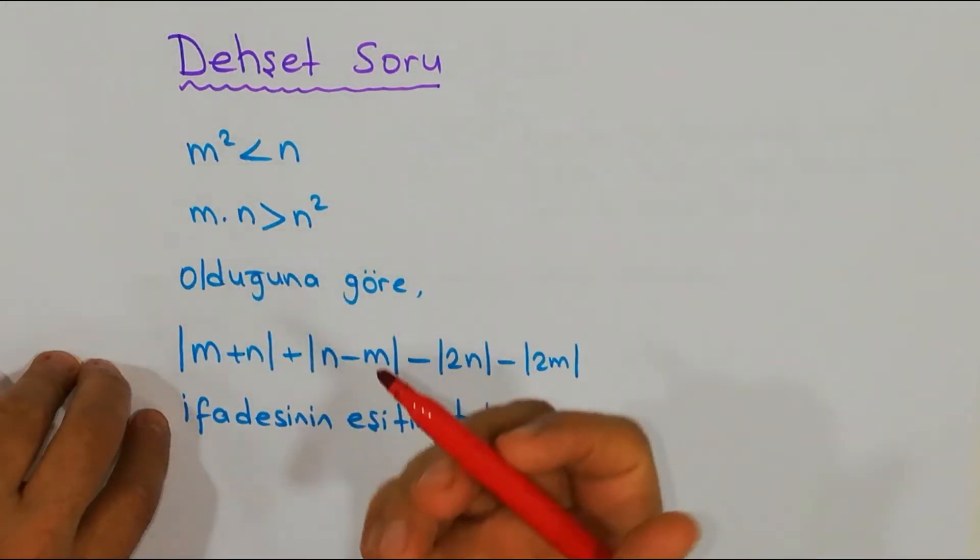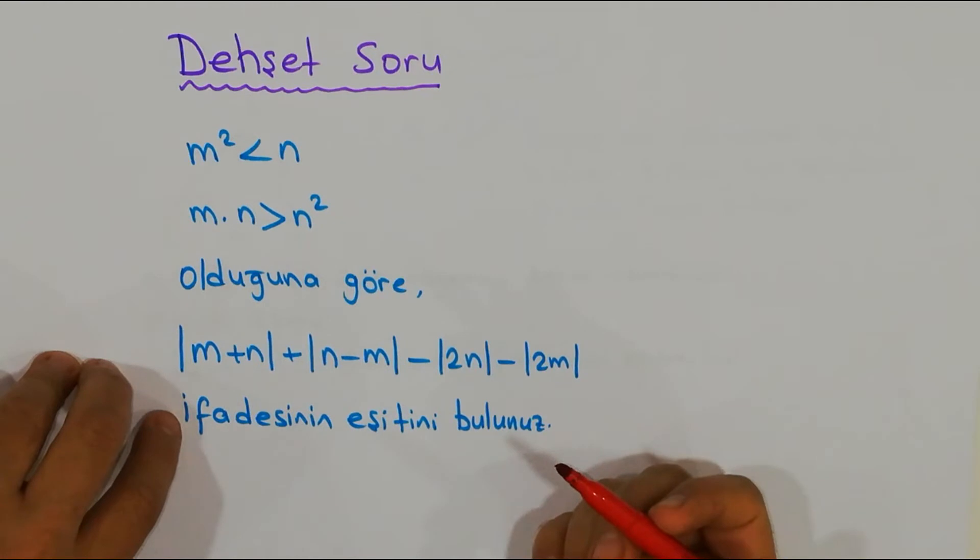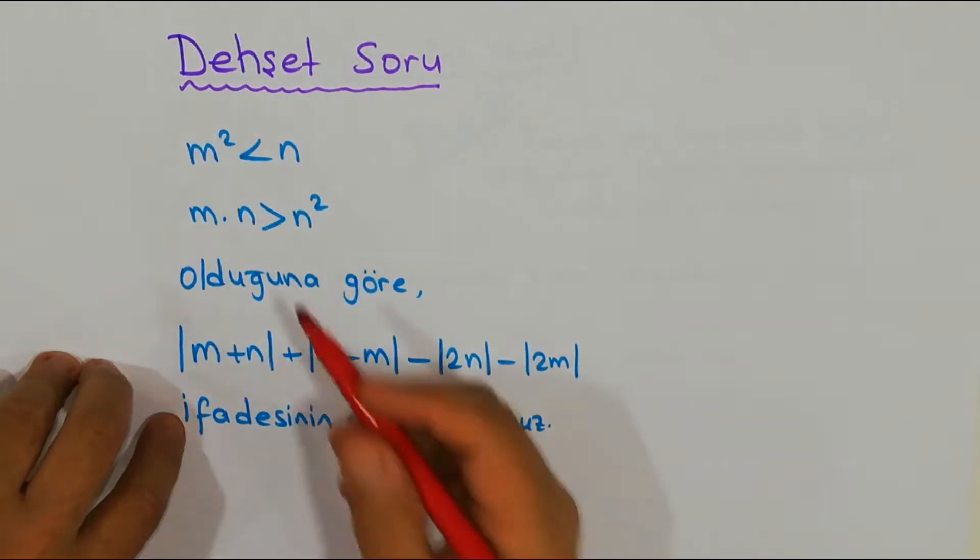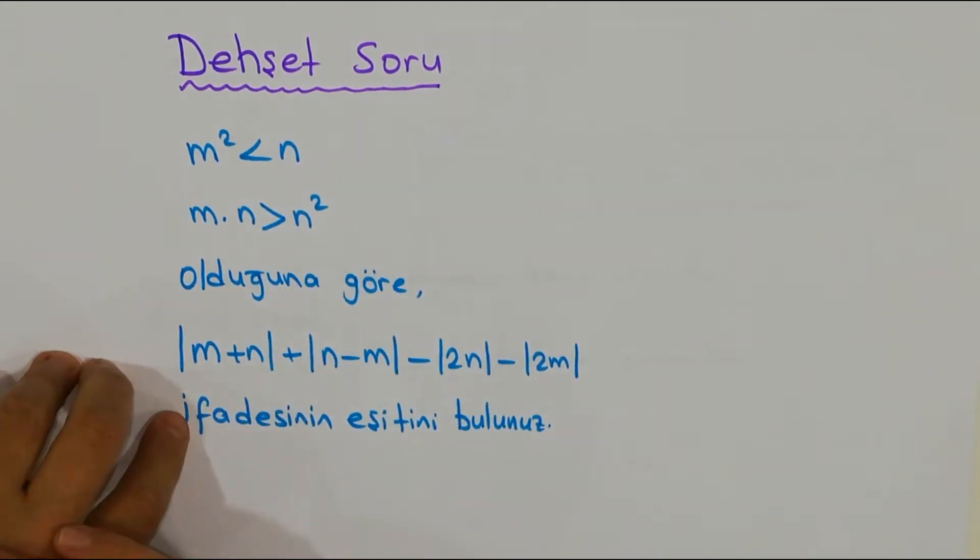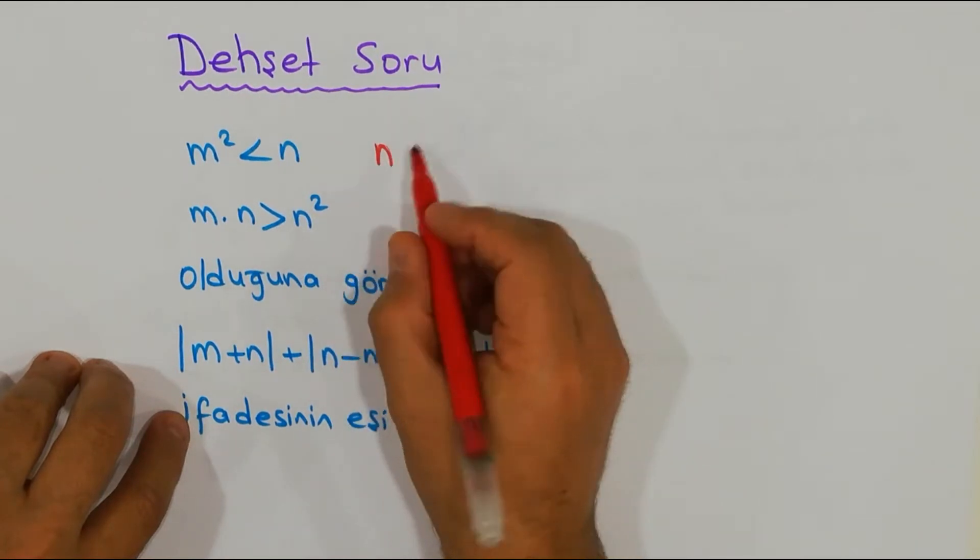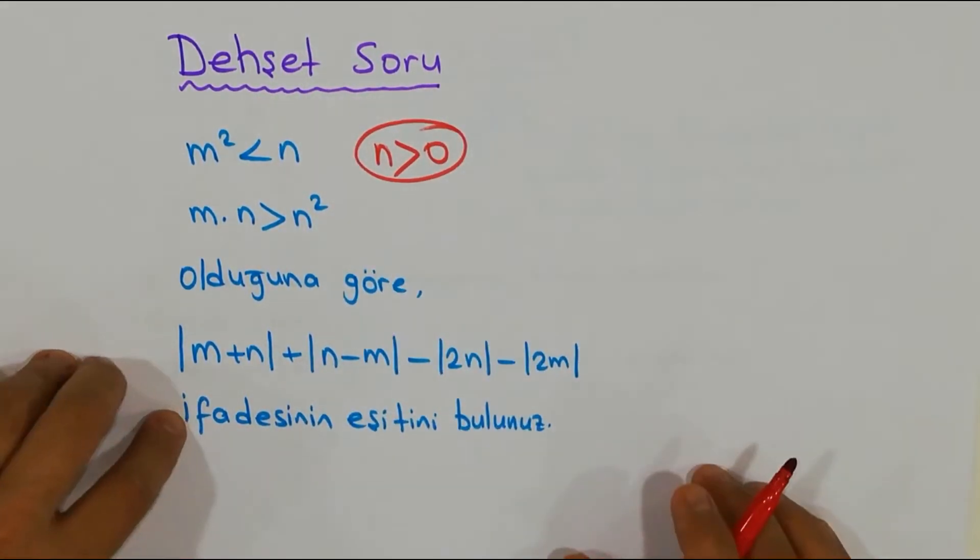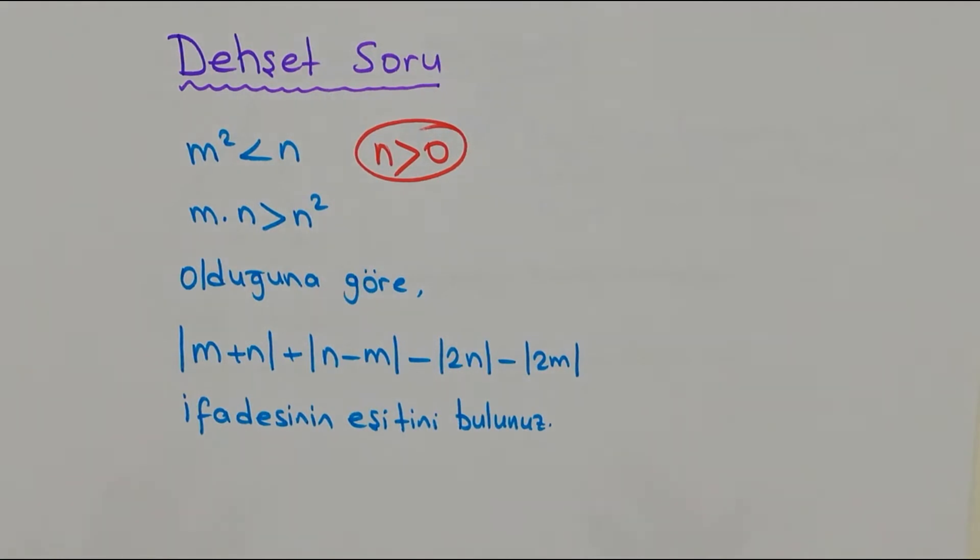Tabiki kuralları bileceğiz, bütün kuralları özümseyeceğiz, ondan sonra yorum yapmaya başlayacağız. Şimdi biz daha önceki bir dersimizde sizinle eşitsizliği gördük. Mesela m² hiçbir zaman negatif olamıyor değil mi? O zaman arkadaşlar n, m²'den büyükse n'in %100 pozitif olduğunu söyleyebilir miyim? Çünkü m² pozitif zaten. Hani 0 bile olsa, diyelim ki m 0 olsa, 0'ın karesi 0, n 0'dan büyük oldu değil mi?